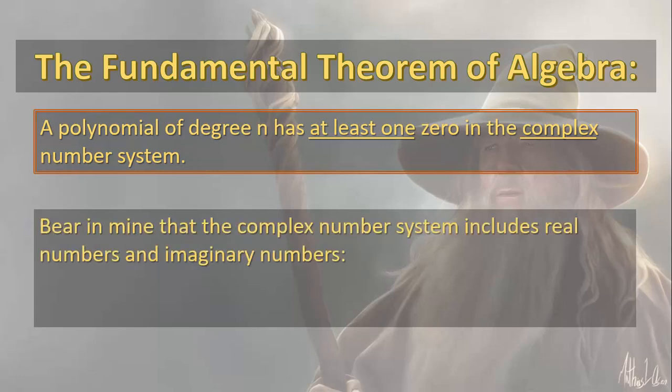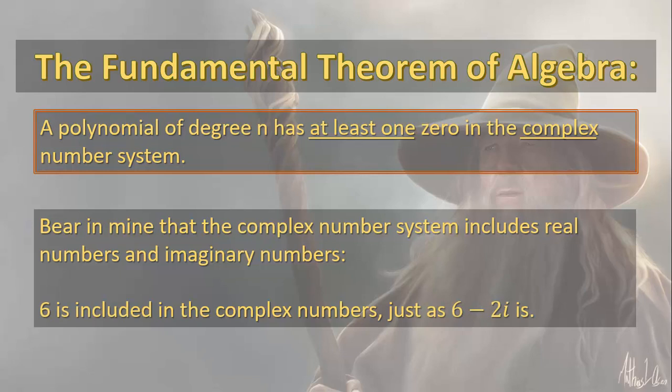Bear in mind that the complex number system includes real numbers and imaginary numbers. Six is included in complex numbers, just as six minus two i is. So this is telling you that there's going to be at least one zero in the complex number system if it's a polynomial.